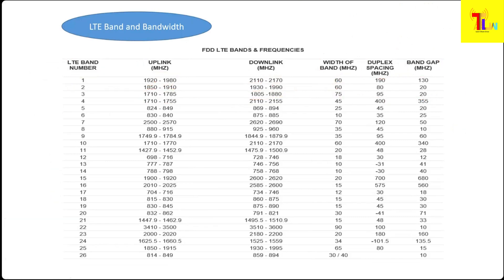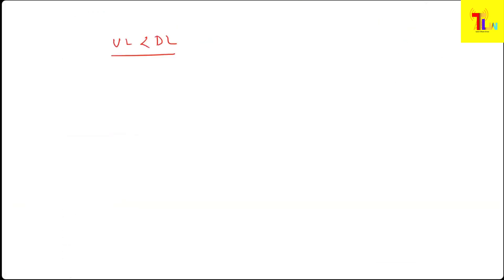If you notice, the uplink frequency — 1920 to 1980 — is lower than the downlink frequency — 2110 to 2170. In every band, uplink frequency is lower than downlink. Why? There is a fundamental property: higher the frequency, higher the losses.